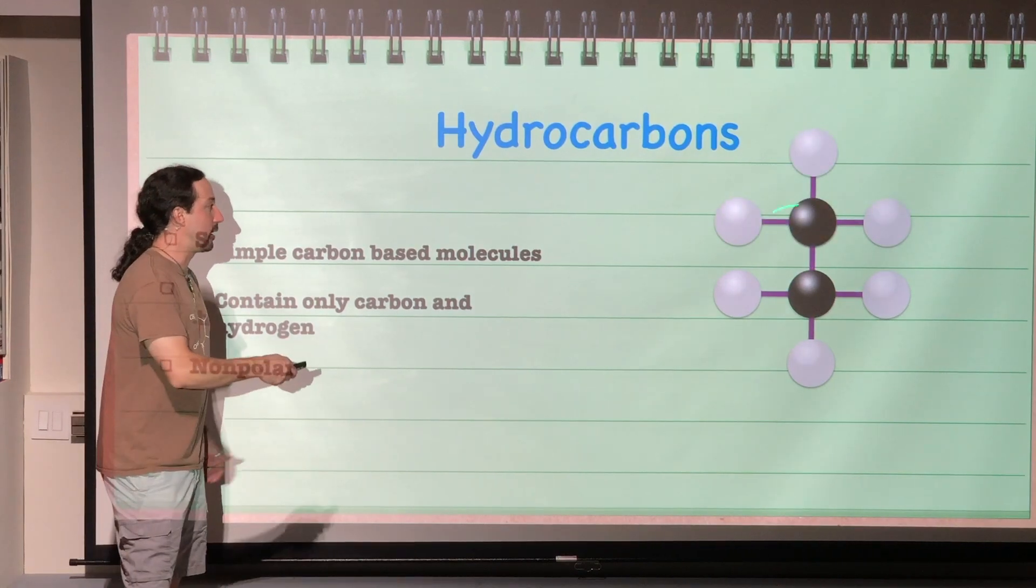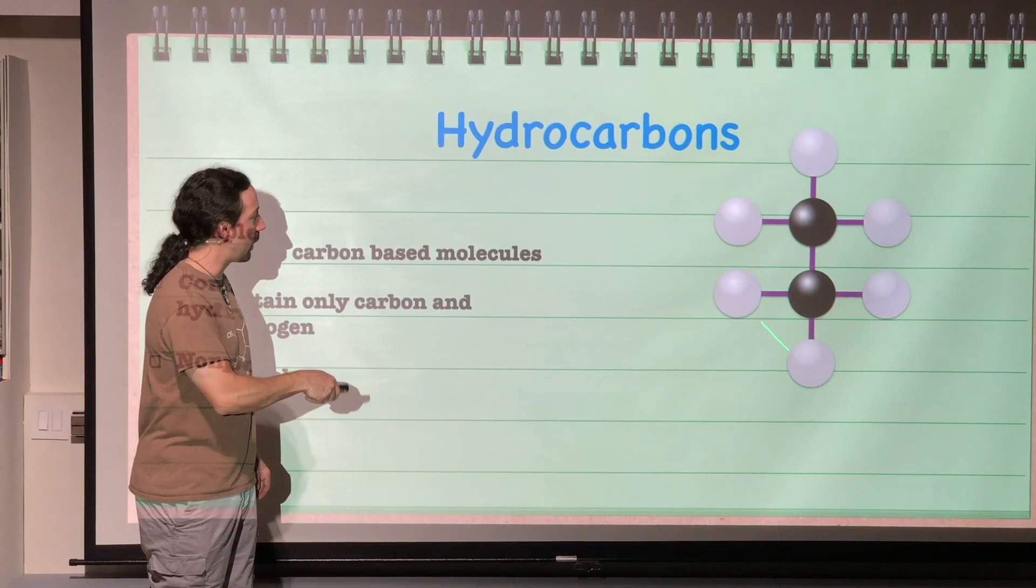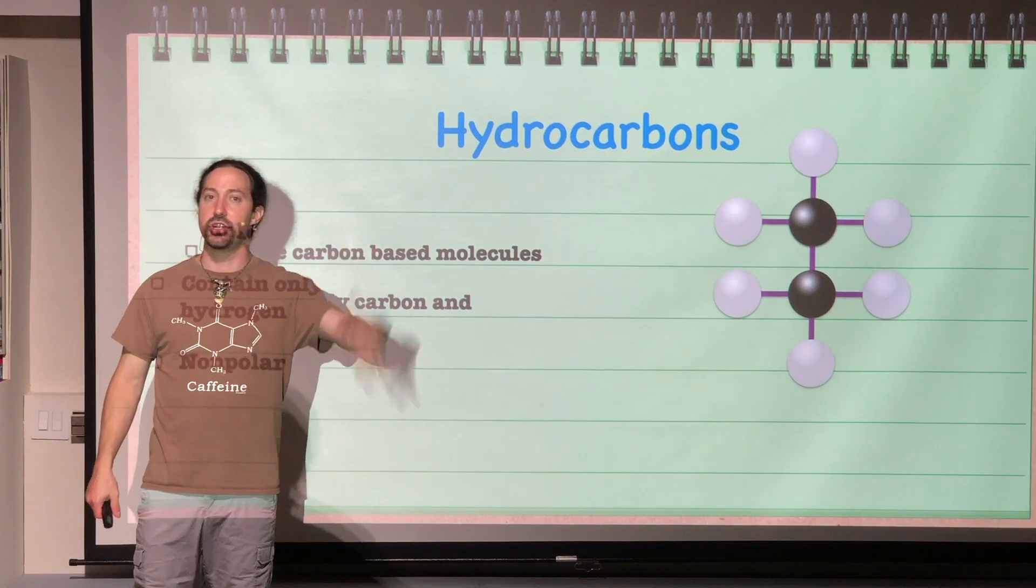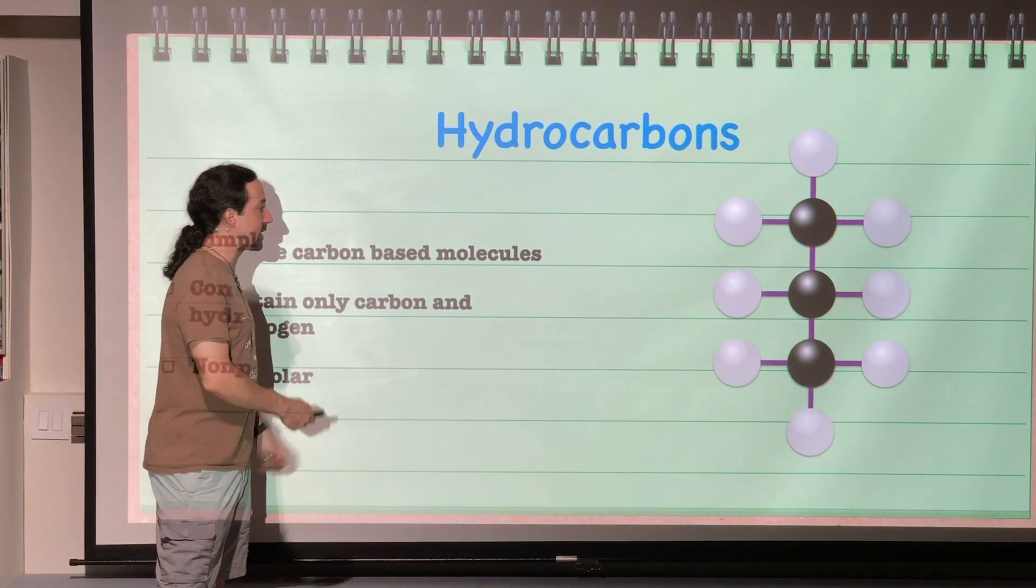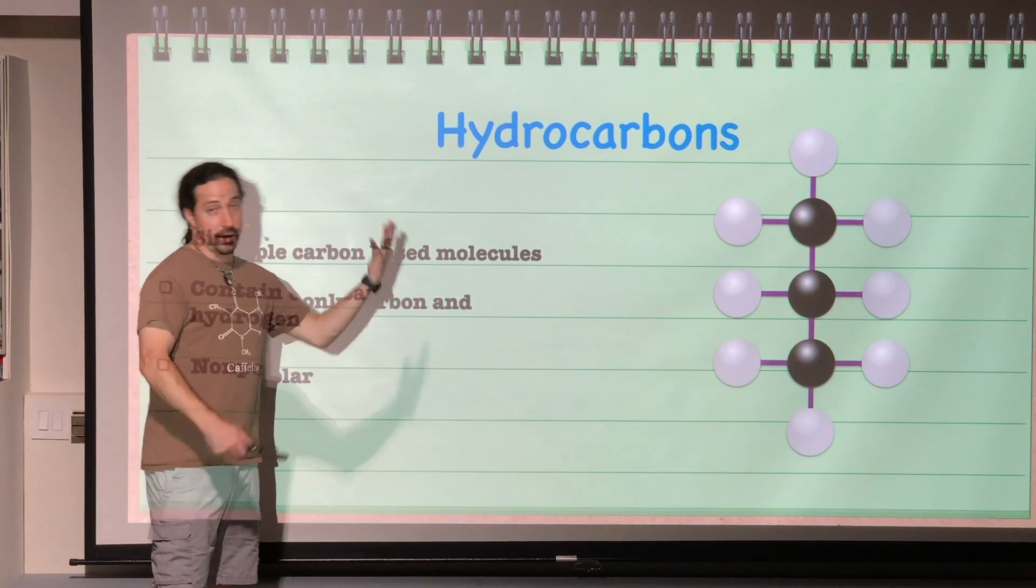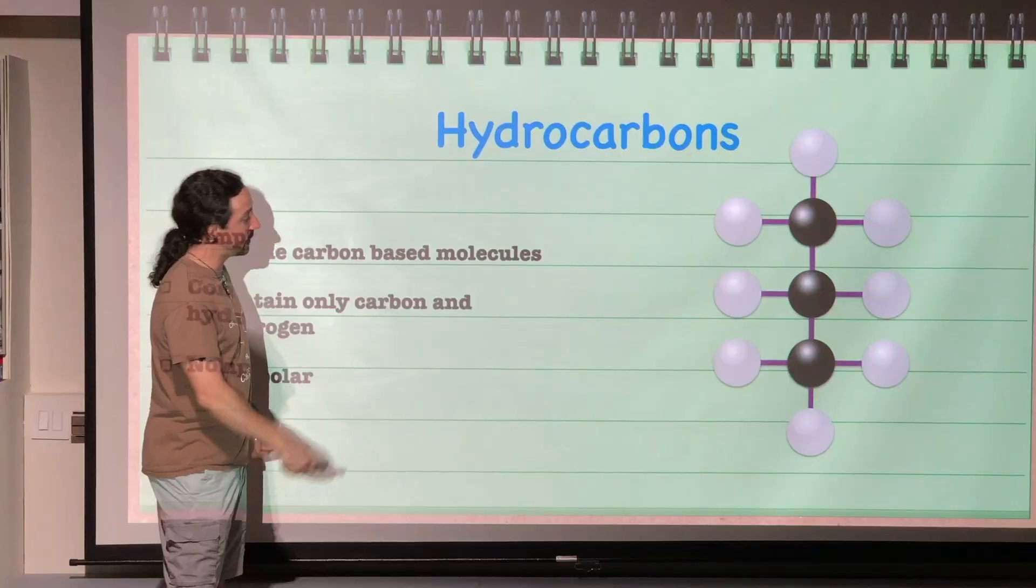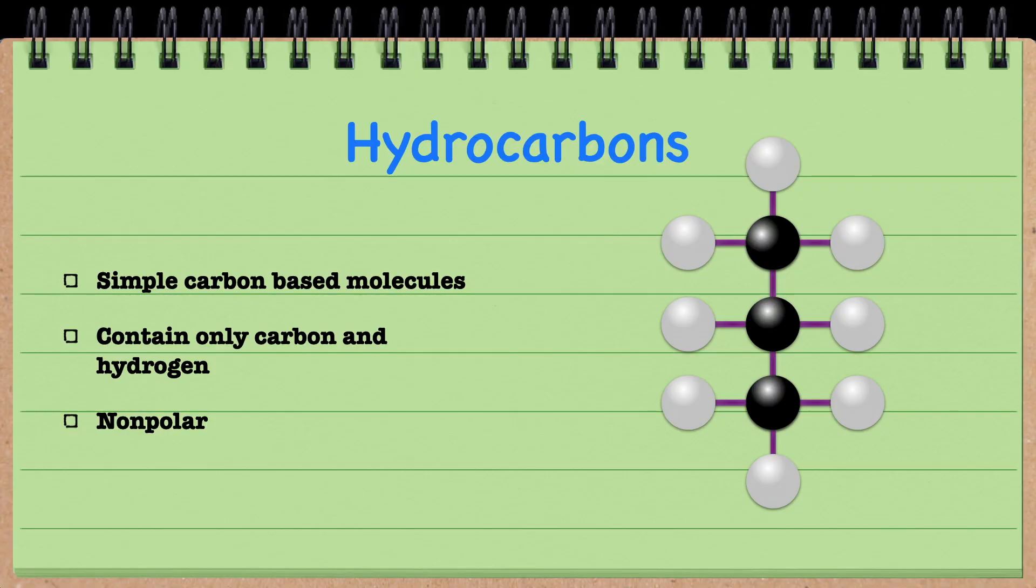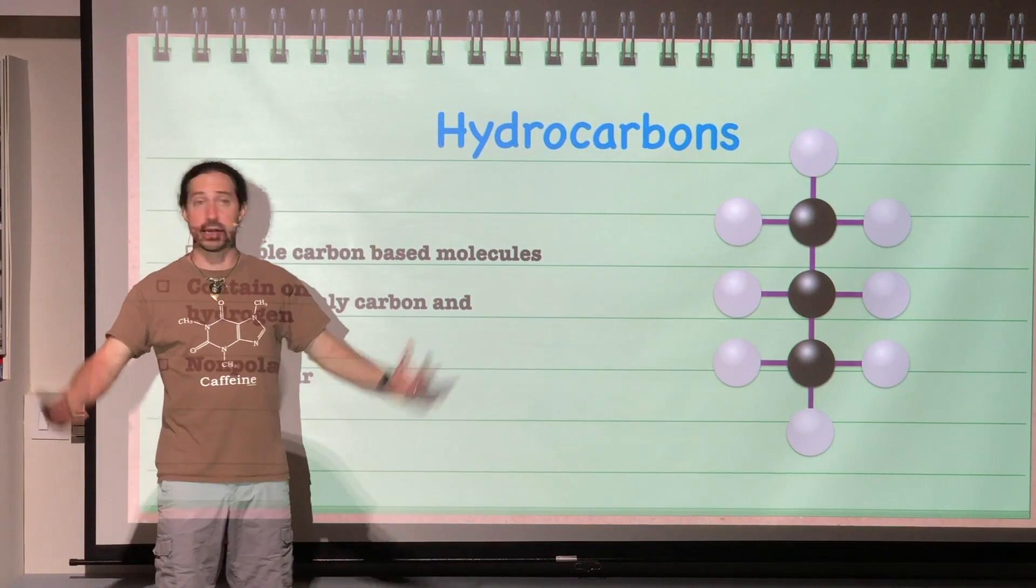And we could add another carbon in, and here we happen to have ethane, where we now have one, two, three, four, five, six hydrogen. So this is C2H6. Or we could just add another one and this gets us to propane, which again, you know, is C3H8. Each of these are hydrocarbons and they are completely nonpolar.